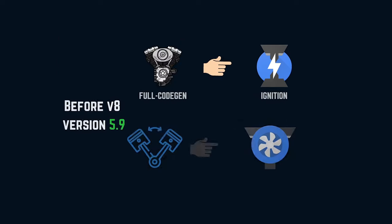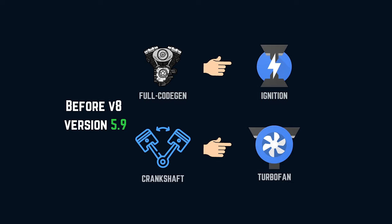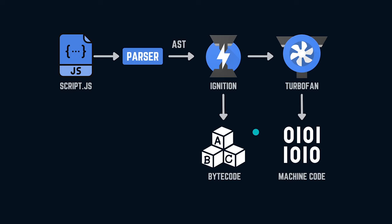Before V8 version 5.9, instead of ignition and turbofan, full code gen and crankshaft performed these operations — and they were different in action, not just in name. Full code gen was the baseline compiler converting the program to architecture-specific machine code with no optimization, leaving all optimization to crankshaft. The reason for switching to the new architecture is that full code gen's output consumed one third of RAM, especially on mobile devices. Once replaced with the ignition interpreter, the generated bytecode shrank by a factor of 9 because ignition's bytecode is more concise.